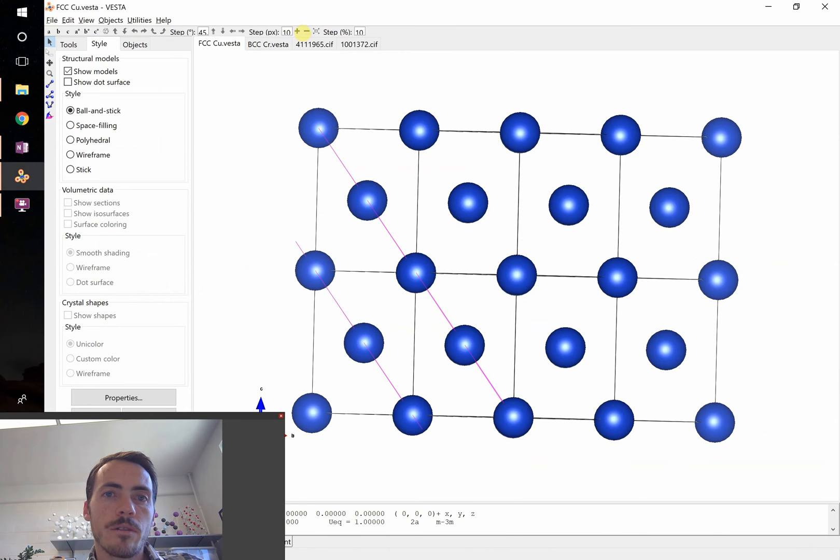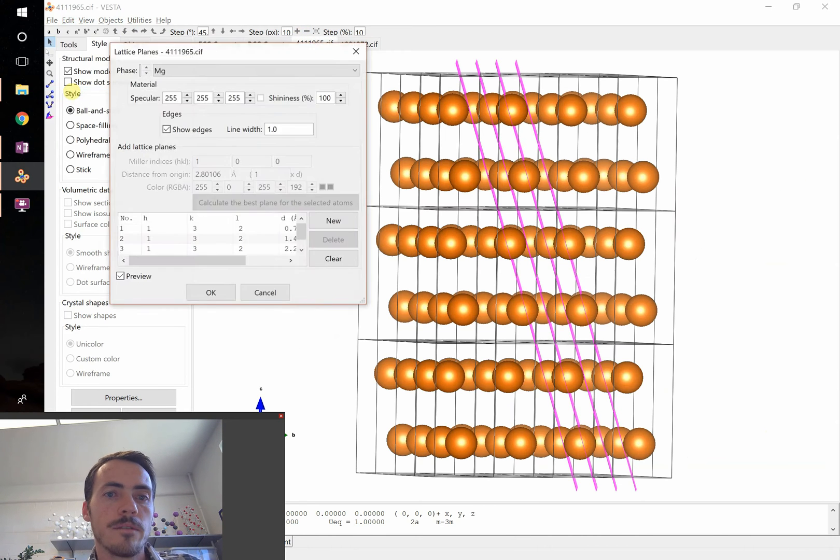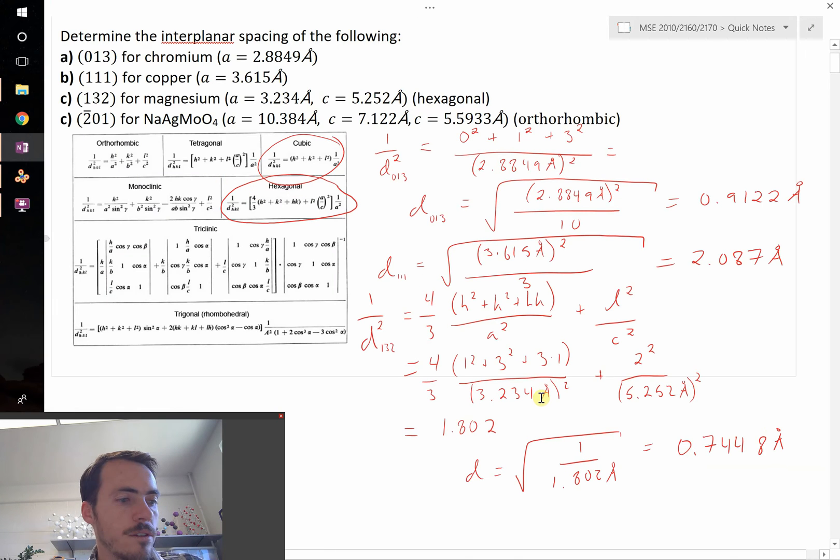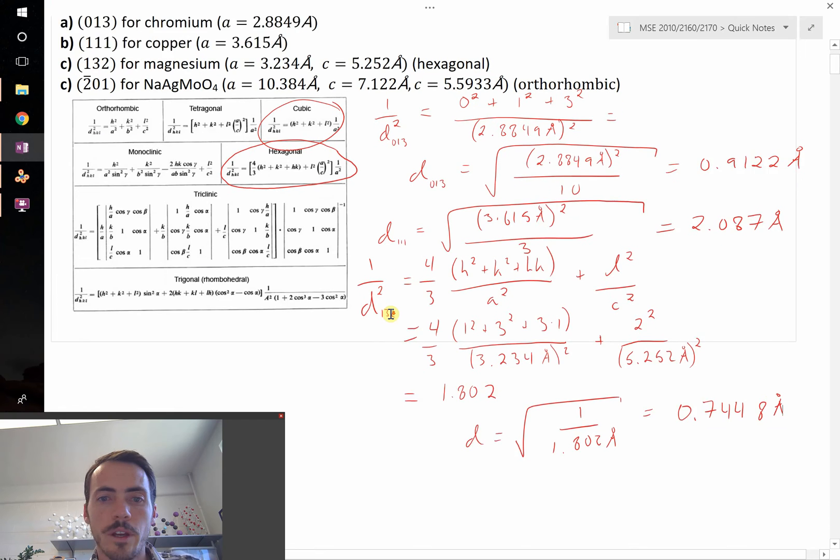Let's double check that. Over here in our hexagonal crystal structure, if we pull up our lattice planes, sure enough, 0.74496, pretty close to what we're getting. Let's do our last one.